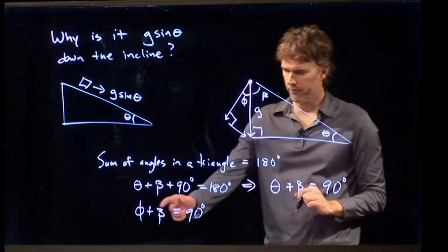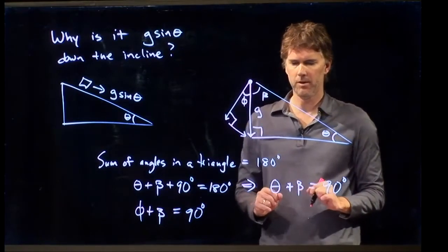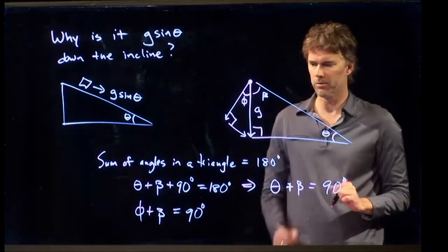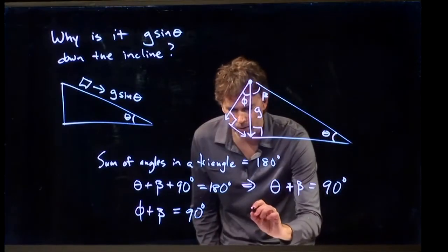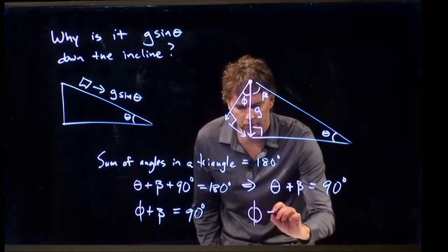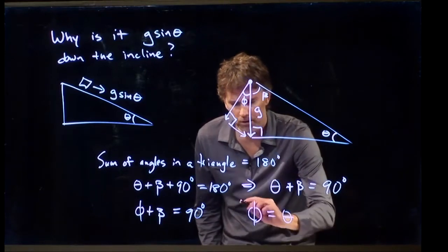And so now look what I have. I have phi plus beta equals 90 degrees, and I have theta plus beta equals 90 degrees. And so the only conclusion that you can make is phi is of course equal to theta.